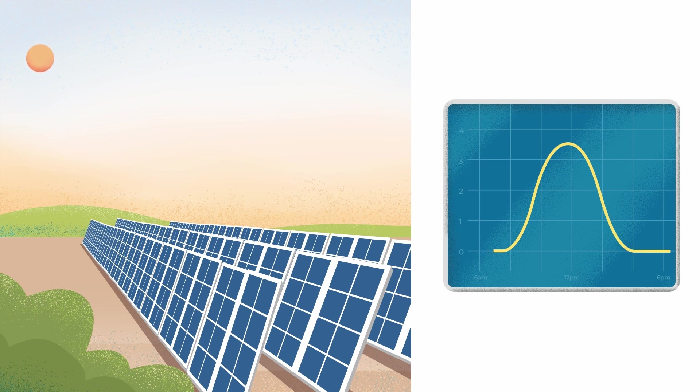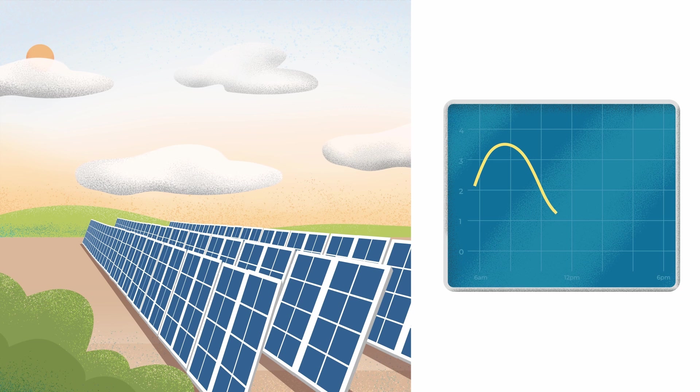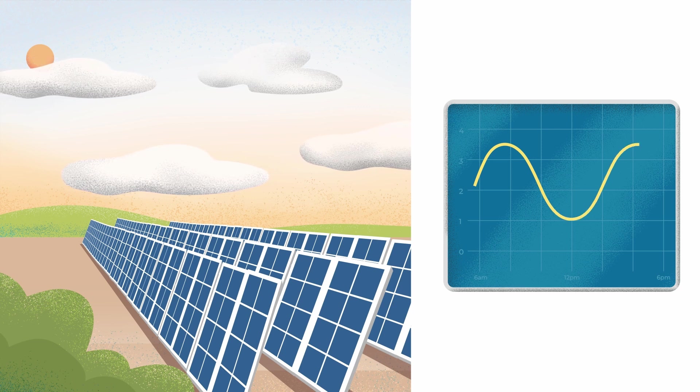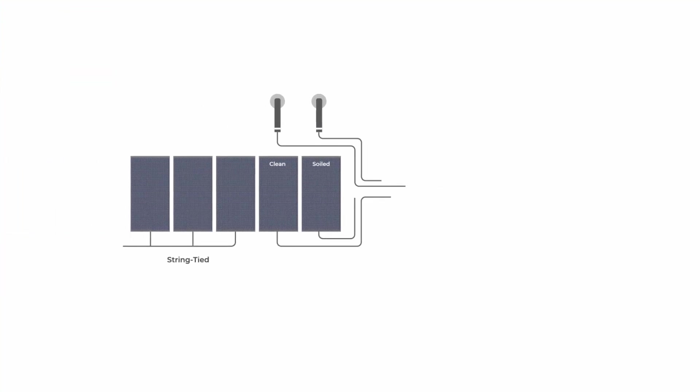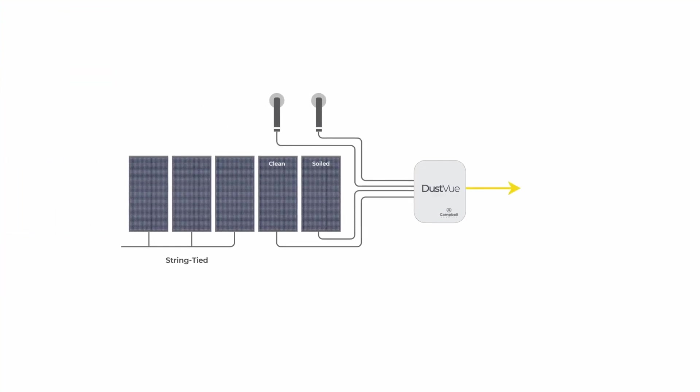Measurements are included in the daily average only when a threshold of global solar irradiance is met, avoiding differences in soiling due to natural environmental instability. DustView sensor is easily integrated into a met station or into your SCADA system.